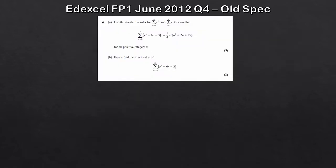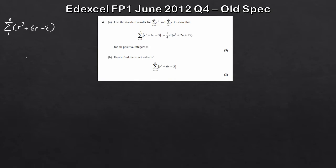So this is an actual exam question — seven marks in total. Part A: using the standard results for the summation of r cubed and r, show that the sum of r cubed plus 6r minus 3 equals a quarter of n squared times n squared plus 2n plus 13 — five marks for that. These questions can be a bit long and tedious but usually not too tricky. Part B is a 'hence' question, so even if you can't show part A, you can still attempt part B. I'm going to split the summation of r cubed plus 6r minus 3 from 1 to n into three separate summations: the sum of r cubed, plus 6 lots of the sum of r from 1 to n, minus the sum of 3 from 1 to n.